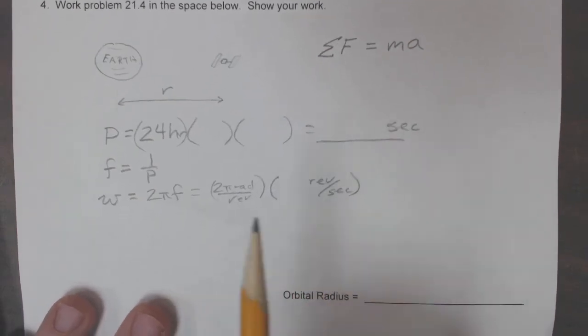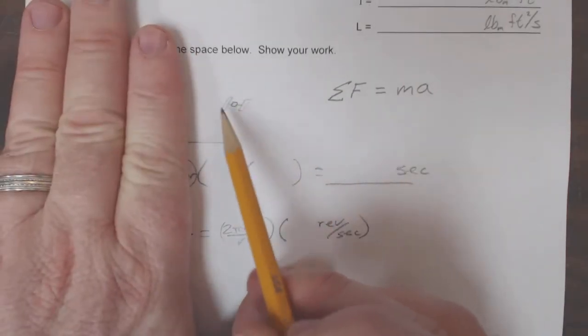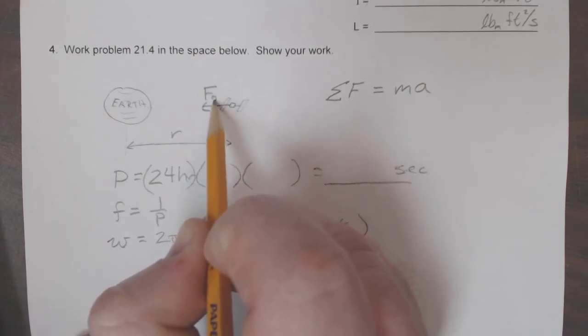Alright, so what we're trying to do is figure out what the orbital radius is. So if we do a free body diagram and just isolate the satellite right here, then the only force that we see acting on it is the force of gravity, F_g.